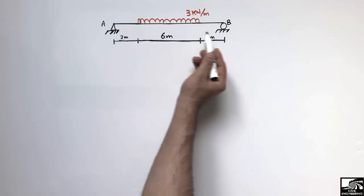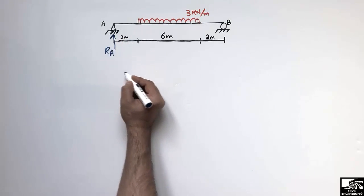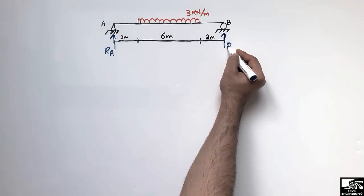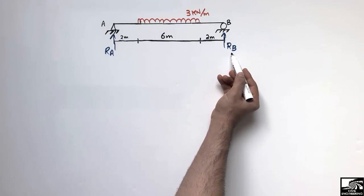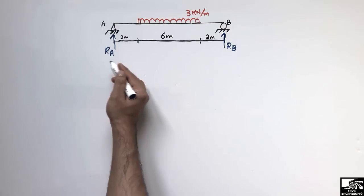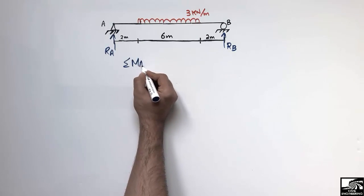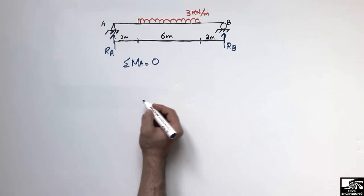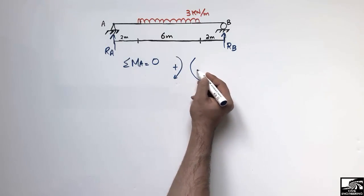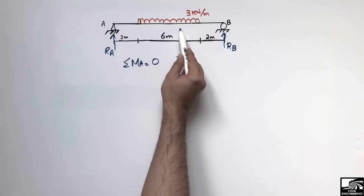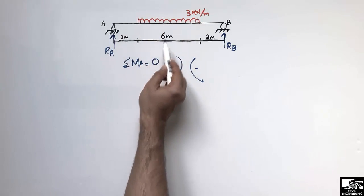To find the shear force and bending moment diagrams, we first need to find the support reactions. There is a hinge support that resists vertical load RA, and a roller support that resists vertical load RB. To find the support reactions, we take the summation of moments at point A equal to zero, with clockwise moments taken as positive and anticlockwise as negative.